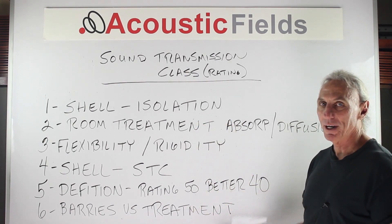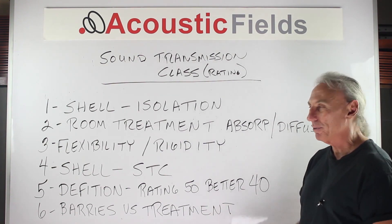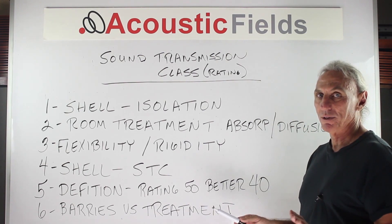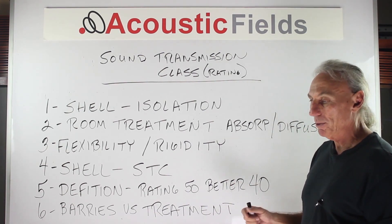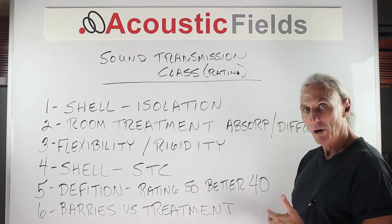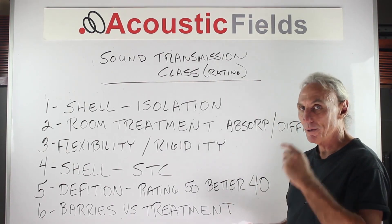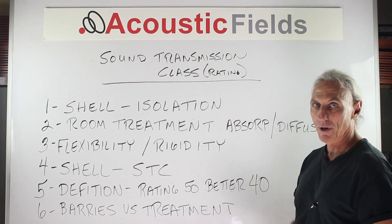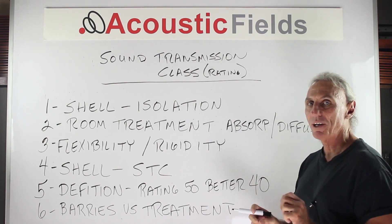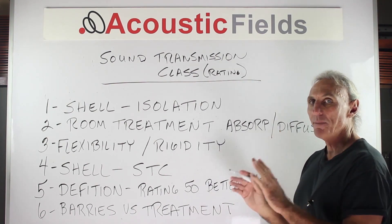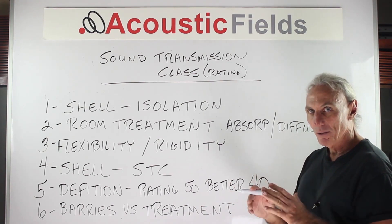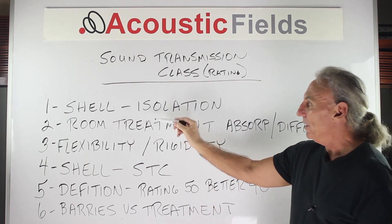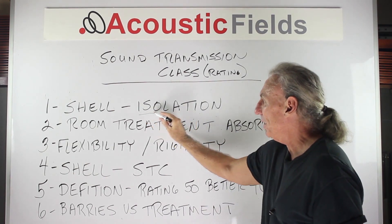Let's go through some definitions and examples. Our rooms technically should be two rooms — it should be a room within a room. The room we're in is where we do all our work, where we play our music, where we do our recording. The room around that is our shell, and this structure is all about isolation. You want to keep all the energy in the room in the room, and keep all the energy produced outside from coming into the room. So the chief objective of our shell is isolation.